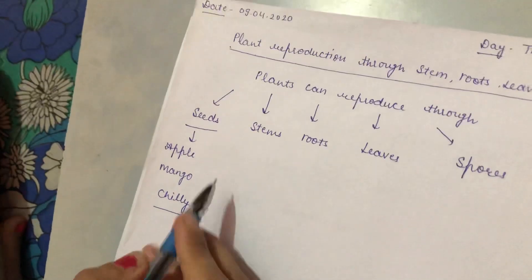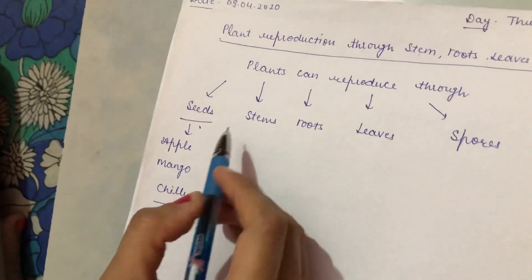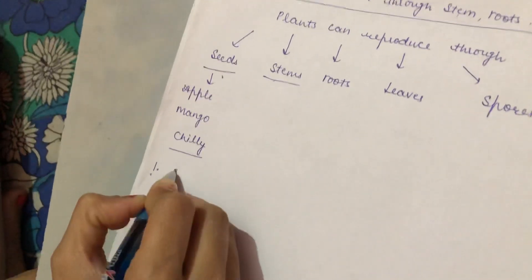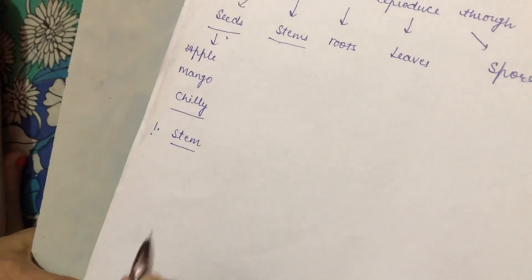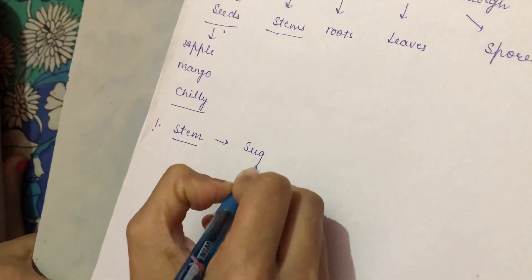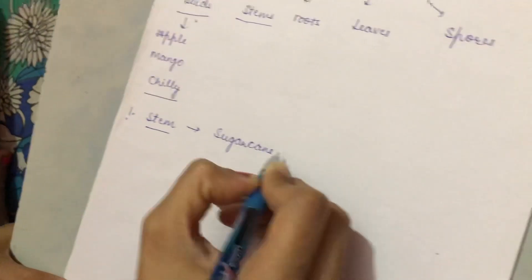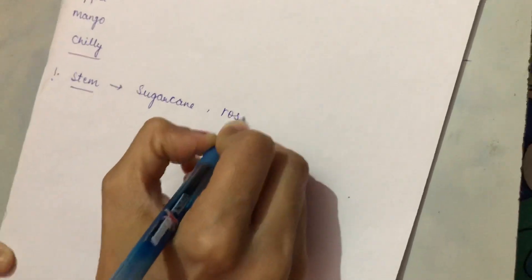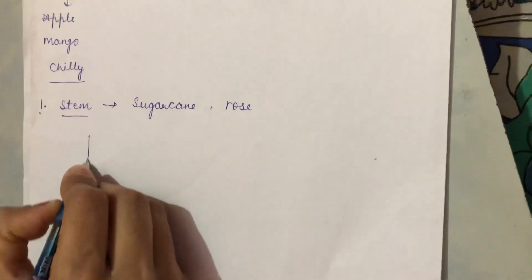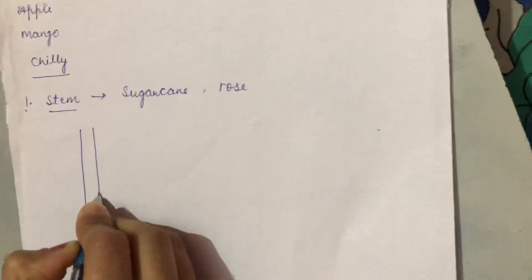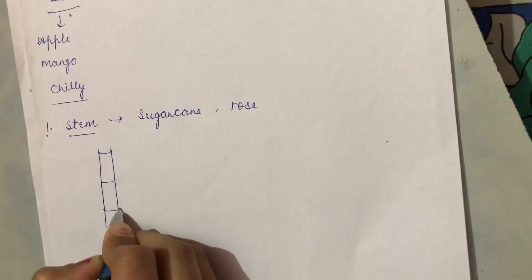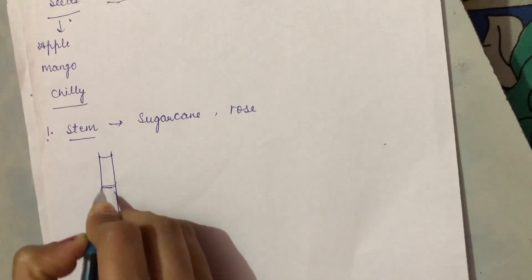And today we will discuss how new plants can grow through stem. You know about some examples like sugarcane, rose. These plants can grow using stem. Like this is your sugarcane.